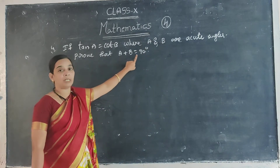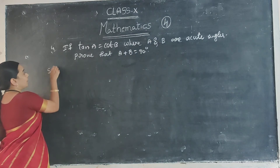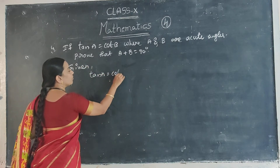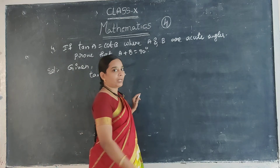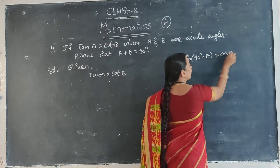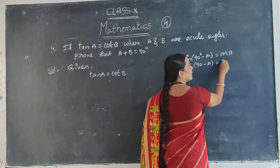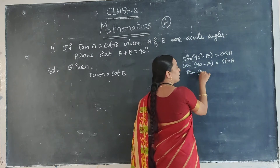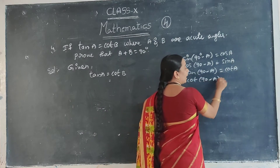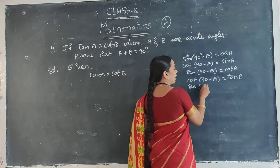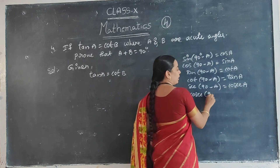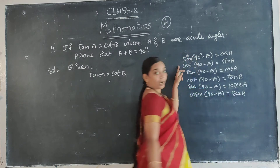Now we want to prove that A plus B is equal to 90 degrees. First of all, we take the given condition: tan A is equal to cos B. Already yesterday I explained complementary angles. Those are: sin(90 − A) = cos A, cos(90 − A) = sin A, tan(90 − A) = cot A, cot(90 − A) = tan A, sec(90 − A) = cosec A, and cosec(90 − A) = sec A. These are the complementary angles.